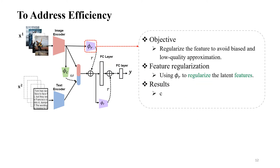Now let's look at how we address efficiency. Under severe missing modality, the approximation network will likely lead to a trivial approximation due to a lack of modality complete training samples. The trivial approximation is usually biased and low quality, making the training process less efficient. To address this, we propose a feature regularization network phi_r to regularize the latent features, making them more diverse and maintaining relatively high quality. Therefore, training efficiency can be improved by using the regularized features.